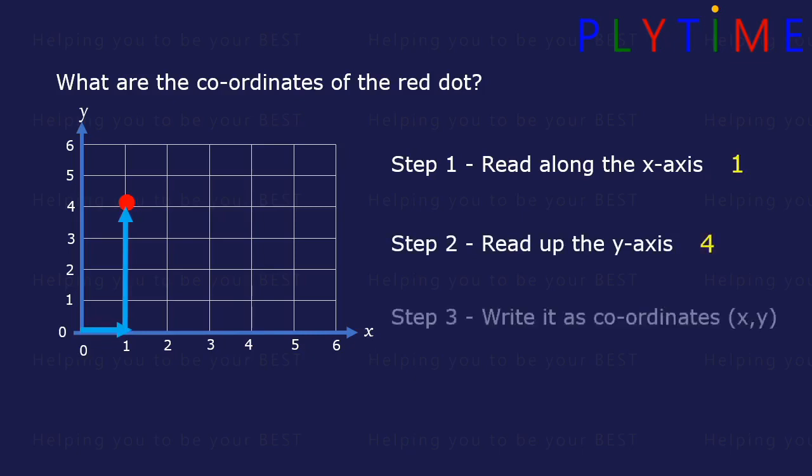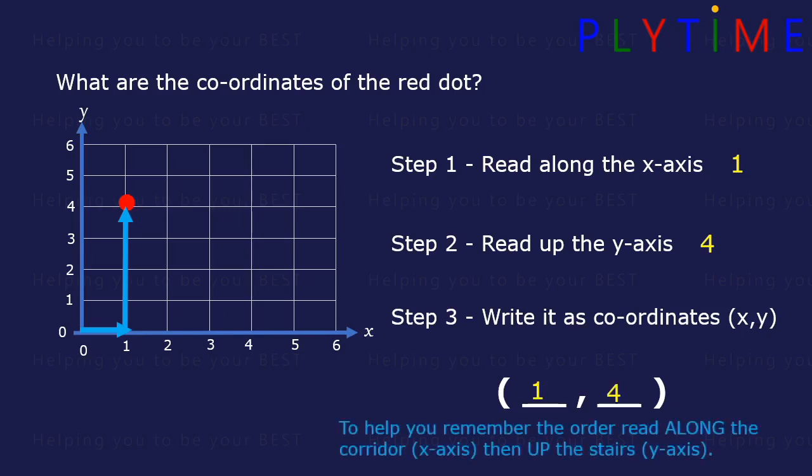So we'd write the coordinates as: open the brackets, 1 for x, comma, 4 for y, close the brackets. To help you remember the order, read along the corridor, or the x-axis, and up the stairs, the y-axis.